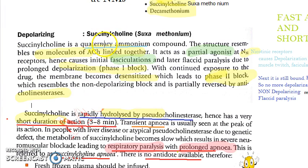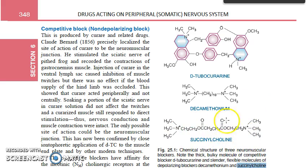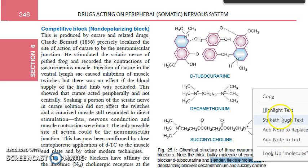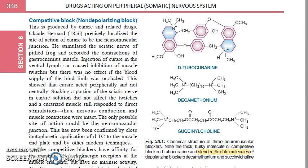Now, regarding the chemistry of succinylcholine: it is a quaternary ammonium compound. Here is the succinylcholine chemistry — you can see it is a quaternary ammonium compound. Decamethonium is also shown here. This other molecule, d-tubocurarine, is a heavy molecule. Succinylcholine has slender and flexible molecules; depolarizing blockers like decamethonium and succinylcholine are slender and flexible. You just need to know this — it is not required to draw in the exam.